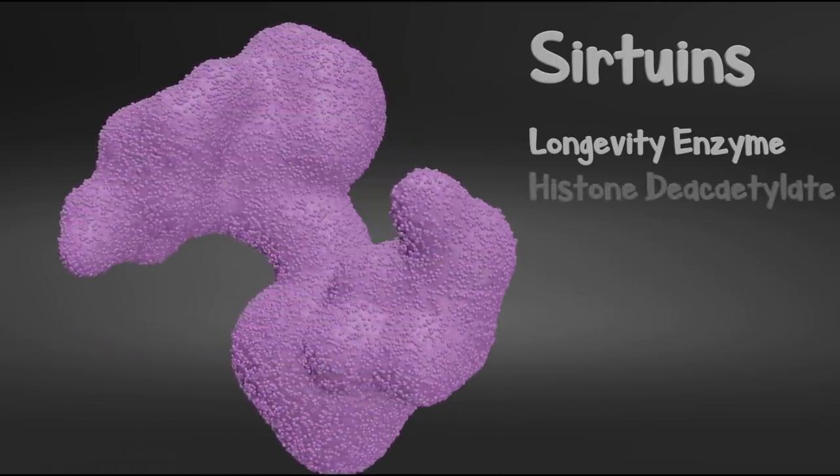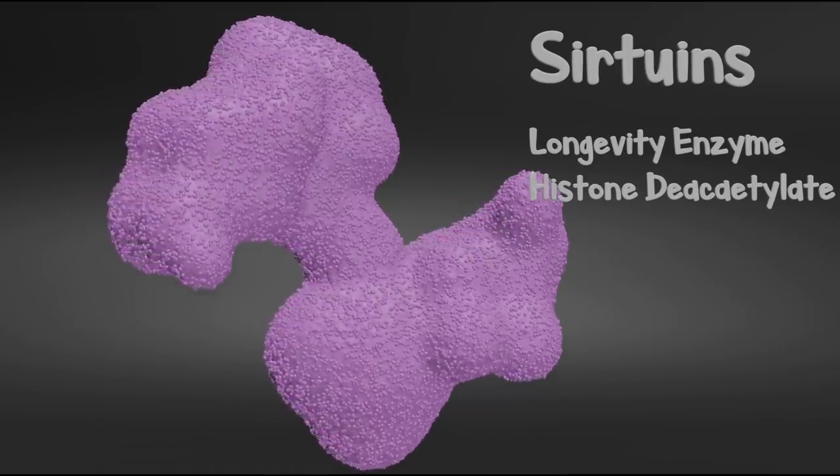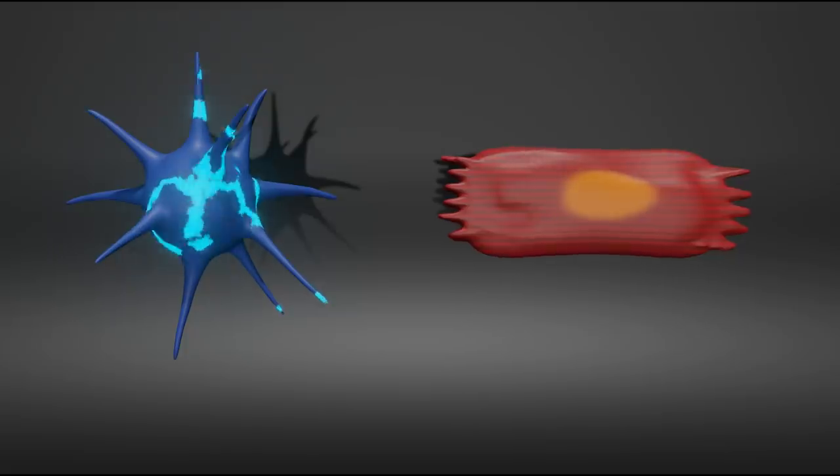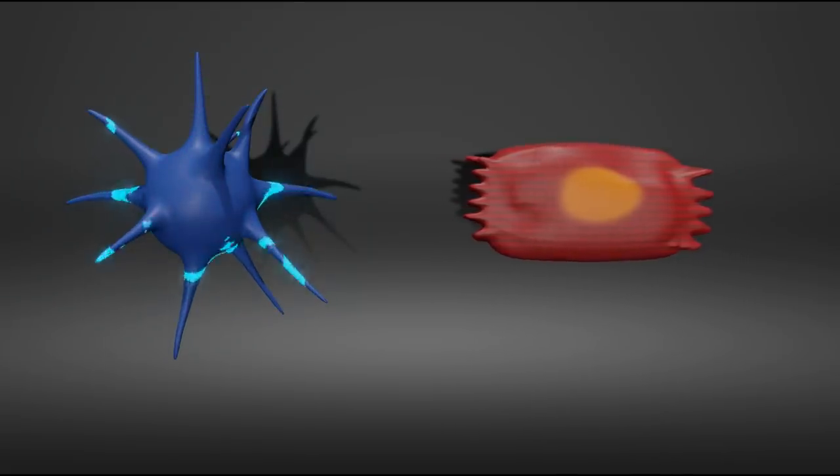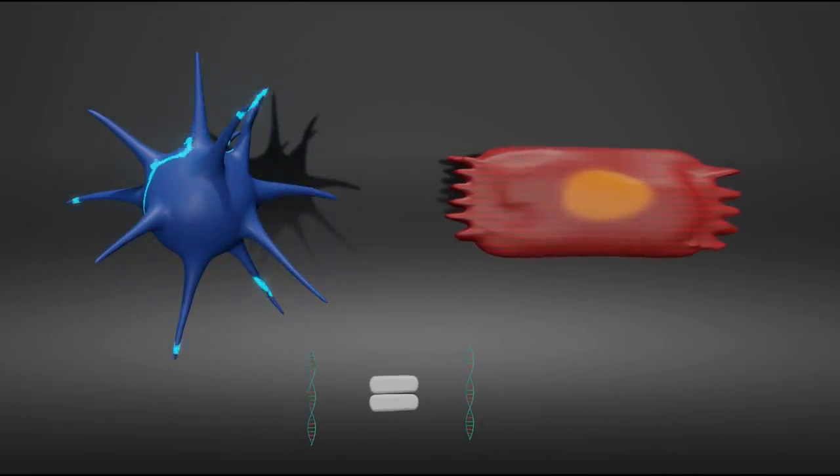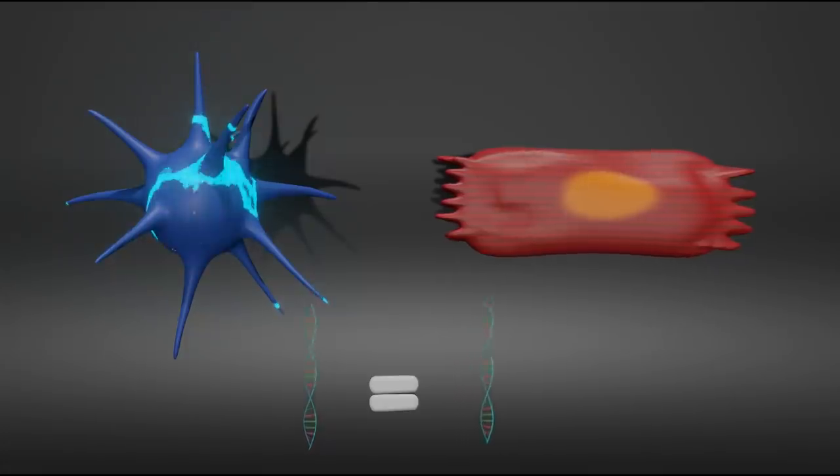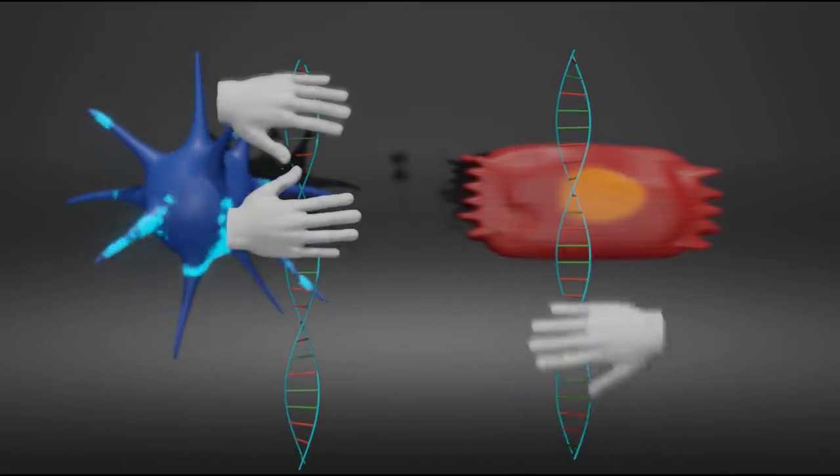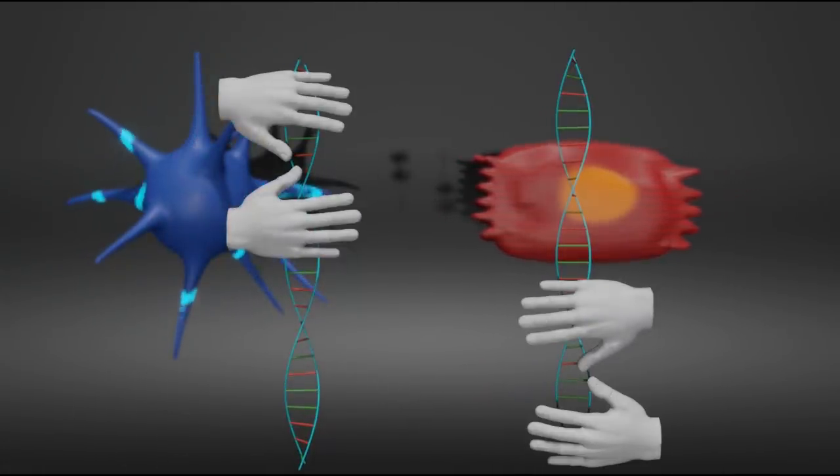Sirtuins are also histone deacetylates. What does that mean? The epigenome is the reason a brain cell behaves differently from a heart cell despite containing the same genetic information. This is mostly accomplished by physically controlling which genes are available to be read and which are off limits.